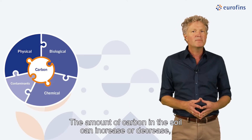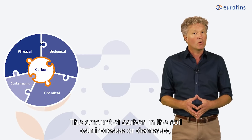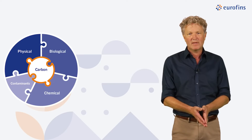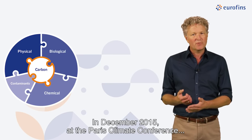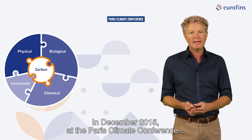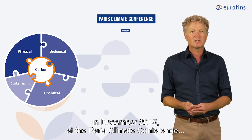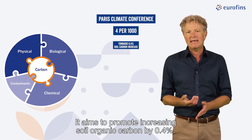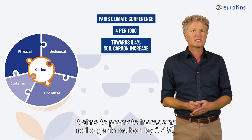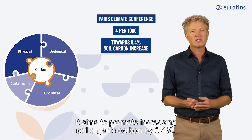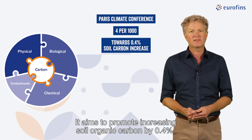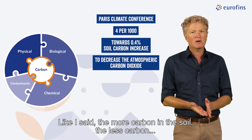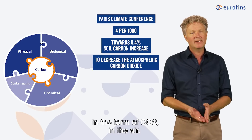The amount of carbon in the soil can increase or decrease depending on how the land is managed. In December 2015, at the Paris Climate Conference, the 4 per 1000 initiative came to light. It aims to promote increasing soil organic carbon by 0.4 percent — the more carbon in the soil, the less carbon in the form of CO2 in the air.